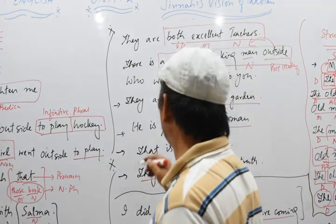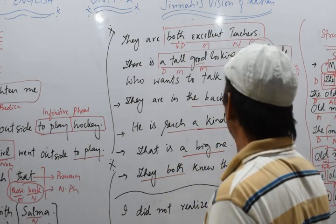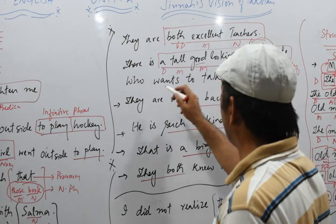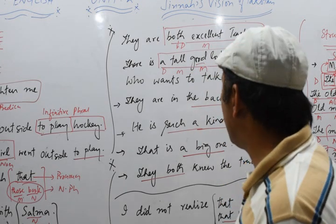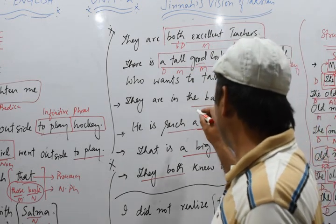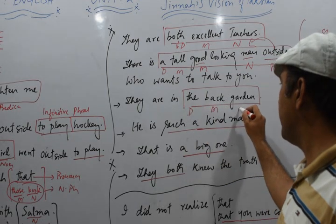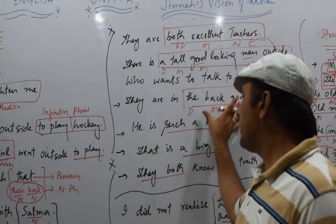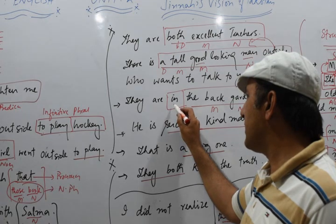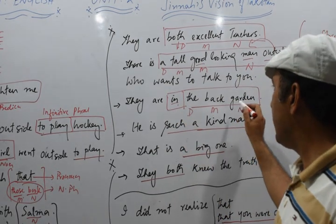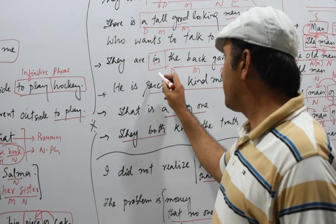We also have 'who wants to talk to you' — this is a clause that tells us about 'man,' making it an adjective clause working as a post-modifier. Then we have 'in the big garden' — 'the' is determiner, 'big' is modifier, and 'garden' is noun — so 'the big garden' is a noun phrase. If we add 'in' with it, it becomes a prepositional phrase, because 'in' is a preposition.